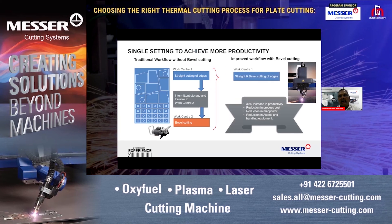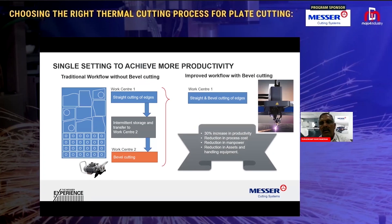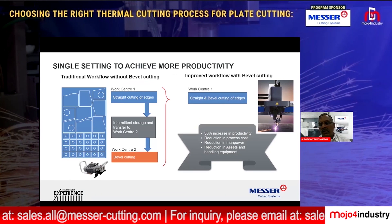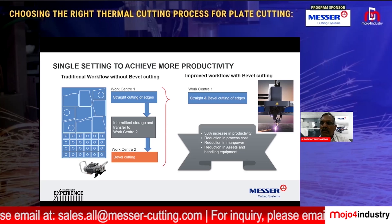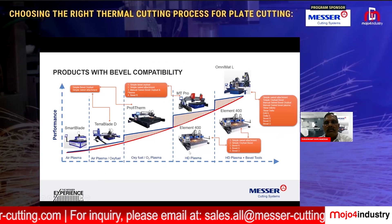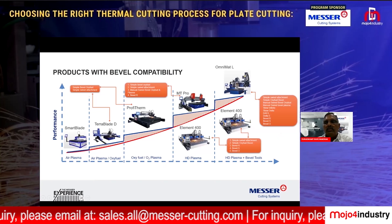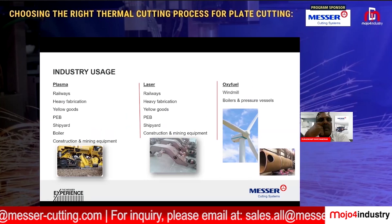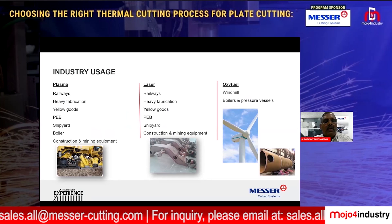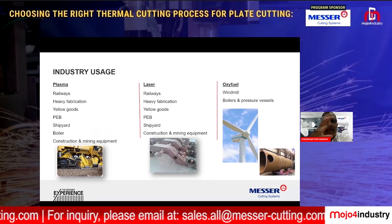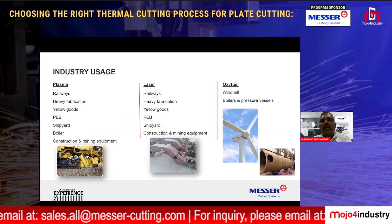With bevel cutting tools, one setup delivers the final output in a single operation. Process cost is reduced by 30 percent, productivity is increased by 30 percent, manpower is reduced, and space is reduced because cutting is done on the primary machine itself — no secondary workstation or separate storage is needed. From last year, more people have started using these tools as they have become more affordable. Plasma machines with bevel tools are widely available, particularly HD plasma bevel solutions used by railways, yellow goods, PEB, shipyards, and boiler manufacturers.